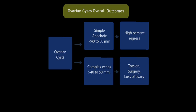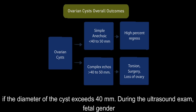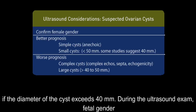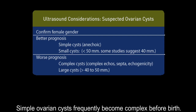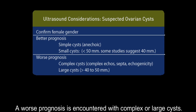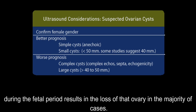To avoid such complications, several authors suggest that cyst aspiration should be performed during the antenatal scan if the diameter of the cyst exceeds 40 mm. During the ultrasound exam, fetal gender should be confirmed. The prognosis is better for simple cysts less than 40 or 50 mm. Simple ovarian cysts frequently become complex before birth, and a worse prognosis is encountered with complex or large cysts. Conservative management with no attempts at aspiration of a complex ovarian cyst during the fetal period results in the loss of that ovary in the majority of cases.